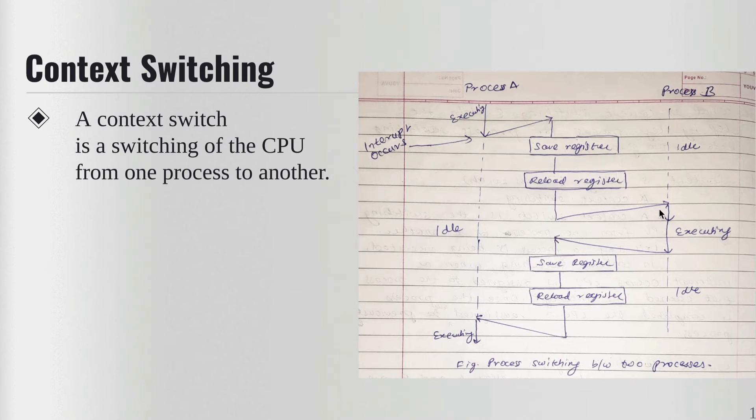Once Process B finishes executing, we save the context of Process B in the register. We reload the context of Process A because we had saved that information earlier in the PCB. Once it's reloaded, we know where it needs to be resumed from and it starts executing again. That's basically context switching.